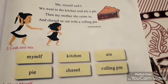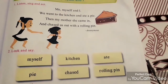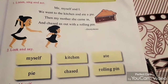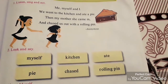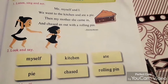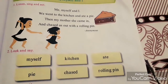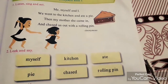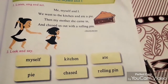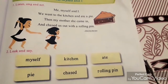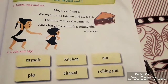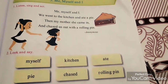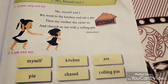M-Y-S-C-L-F: Myself. K-I-T-C-H-E-N: Kitchen. A-T-E: Ate. P-I-E: Pie. C-H-A-S-E-D: Chased. R-O-L-L-I-N-G: Rolling. P-I-N: Pin. Okay. So these are the hard words of this lesson.